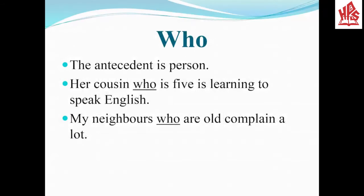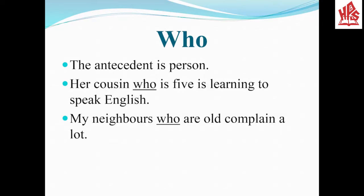Here is further explanation of the mentioned Relative Pronouns. Number one is who. The antecedent of who is a person. Example one: Her cousin, who is five, is learning to speak English — who is referring to cousin, who is a person. Example two: My neighbors, who are old, complain a lot — here who is referring to neighbors.